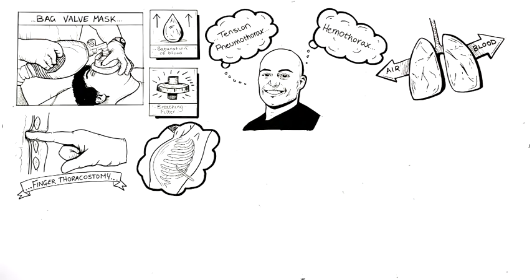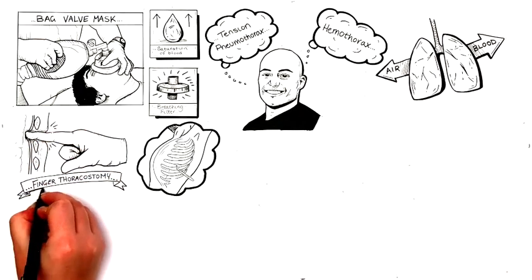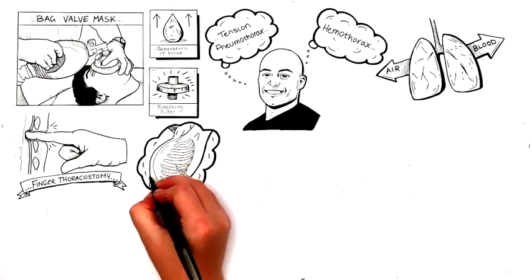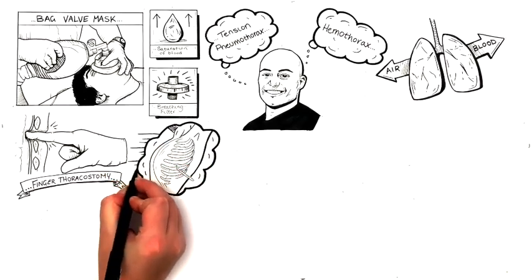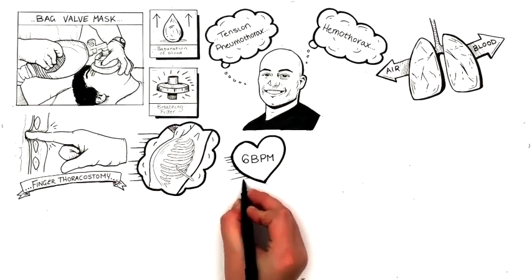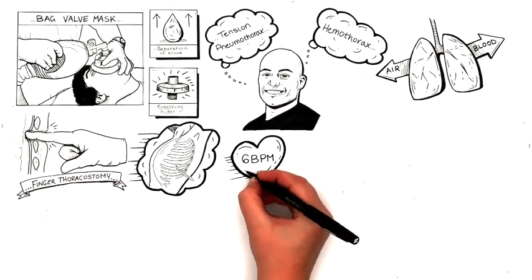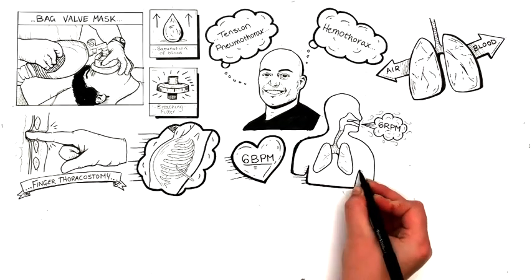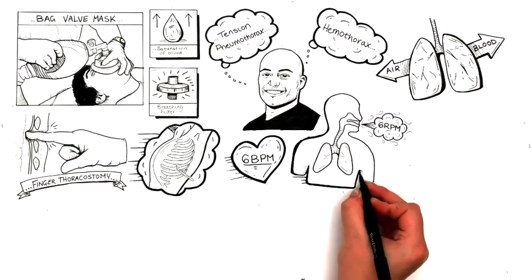But this didn't fix the problem. Critical care proceeded with an open finger thoracostomy on both sides and ended up getting his finger stuck between the patient's broken ribs. The patient's heart rate was only about 6 beats per minute and only had about 6 resps per minute which was not enough to sustain life.